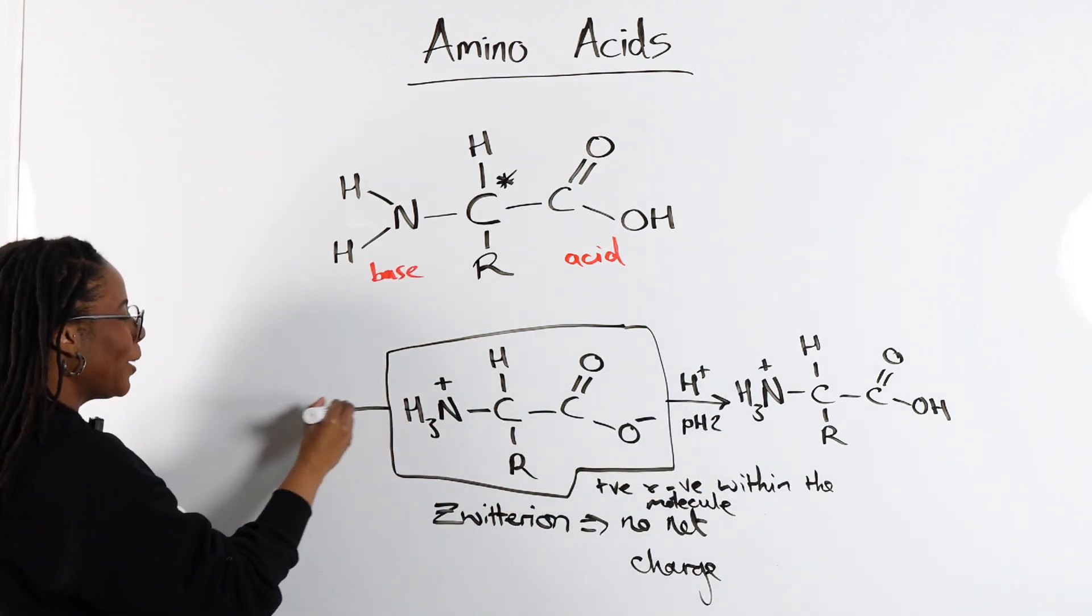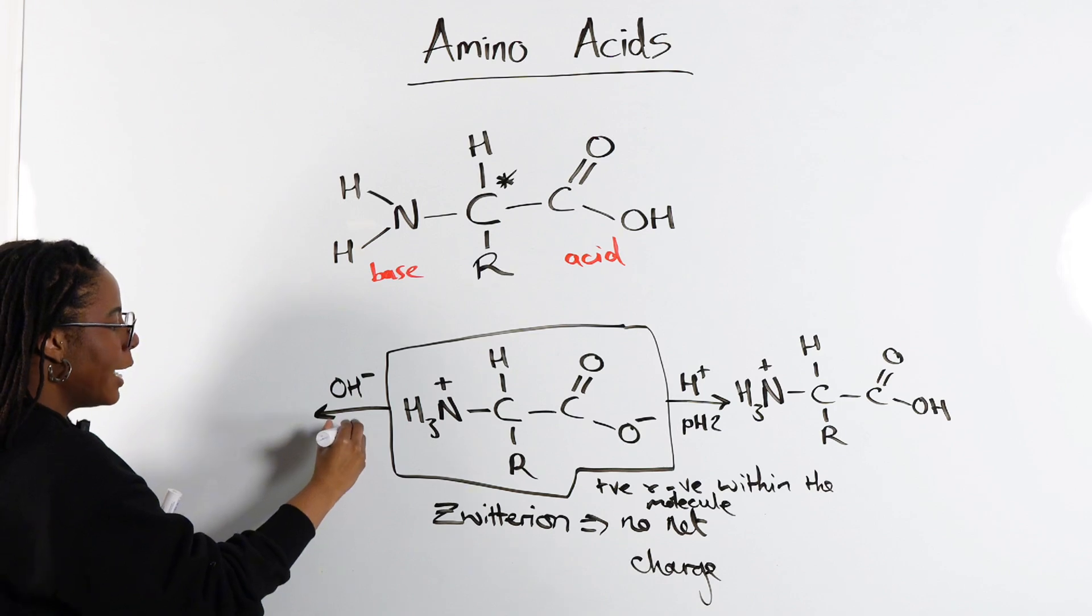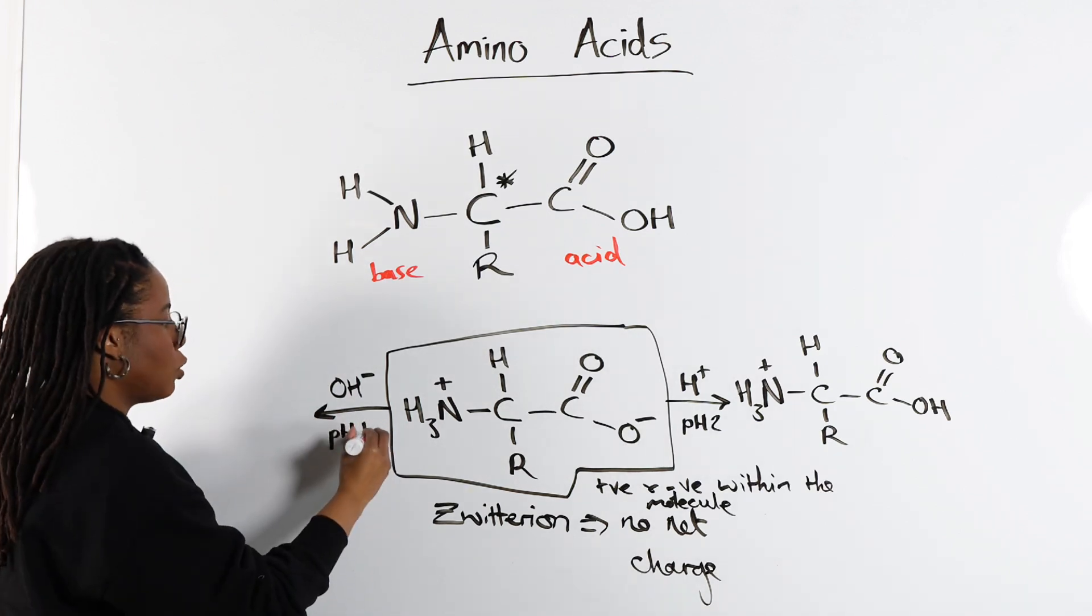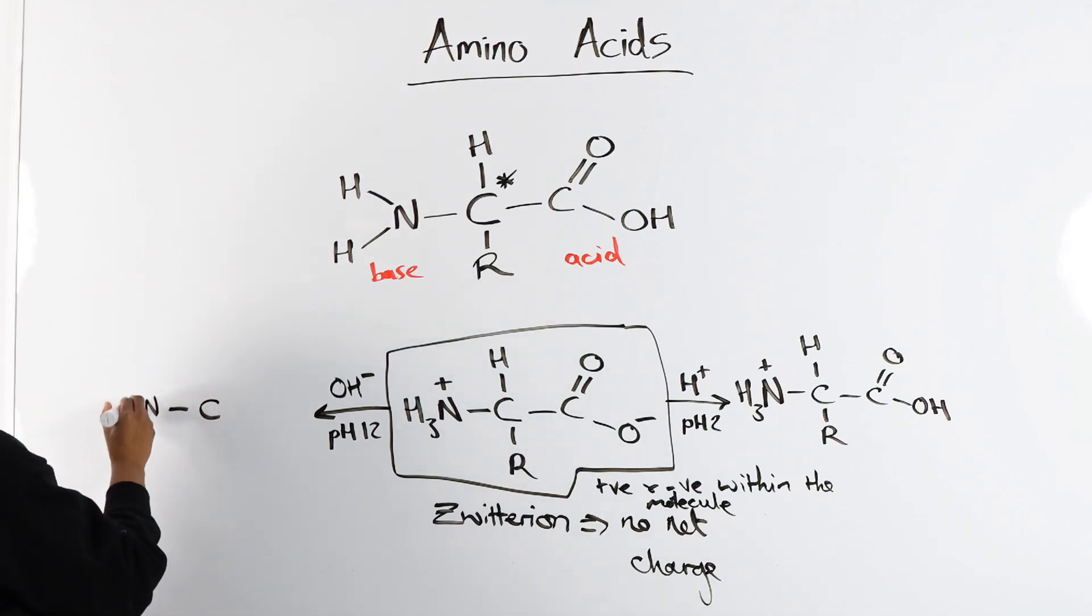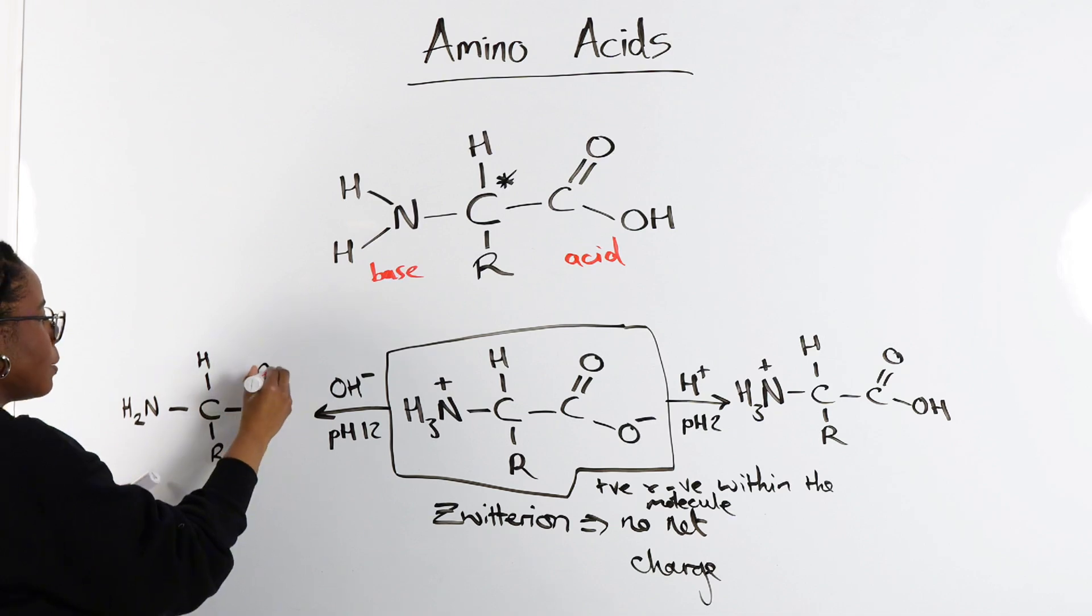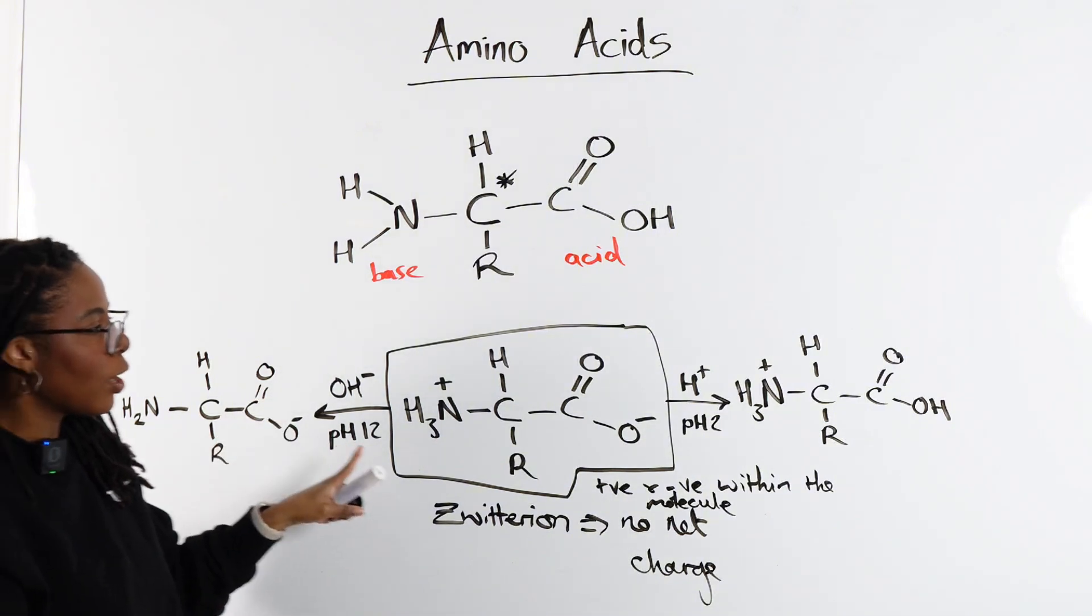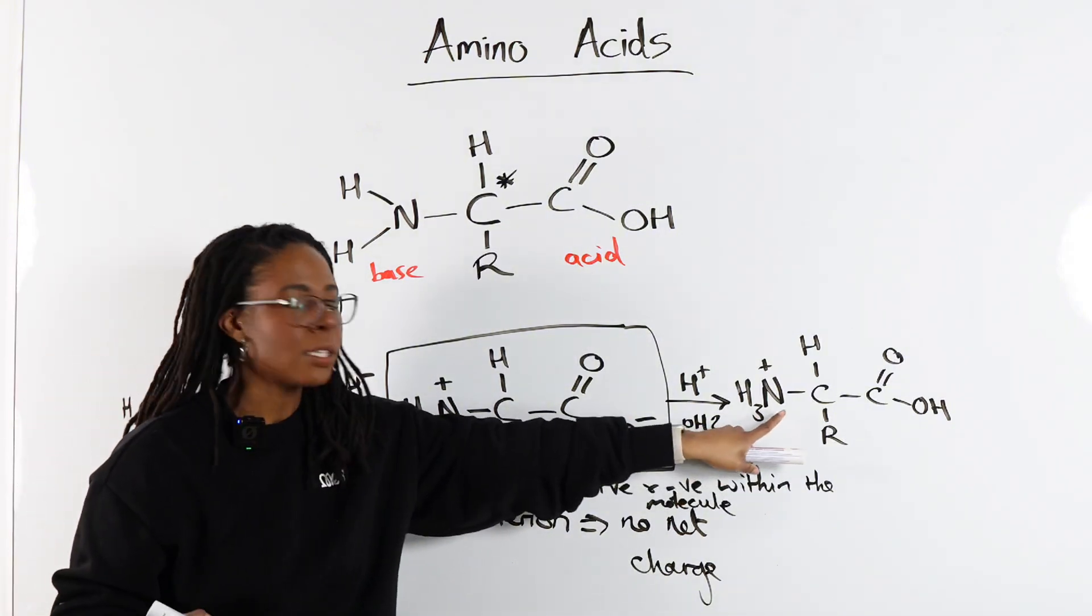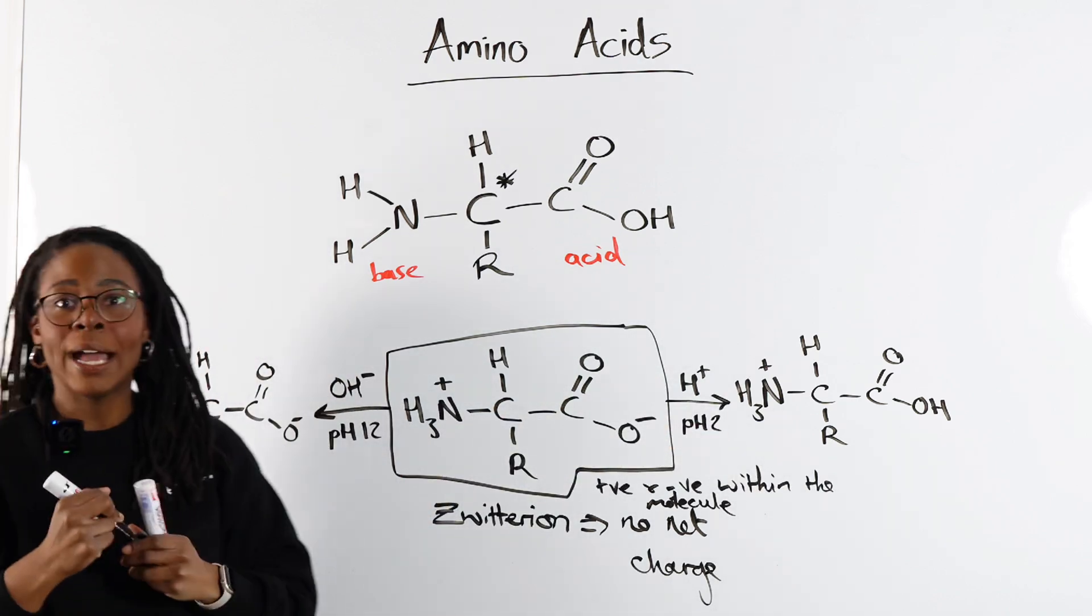Going the other way, if we were to have our amino acid in alkaline conditions, so let's say we added OH-, or in a question it might be worded as where the pH is 12, then our amine group is not going to be protonated, so it's just NH2, but our carboxyl group is going to be deprotonated, so it's going to be O-. So look out for whether they've asked you in acidic conditions, protonate your base, or basic conditions, deprotonate your acid.